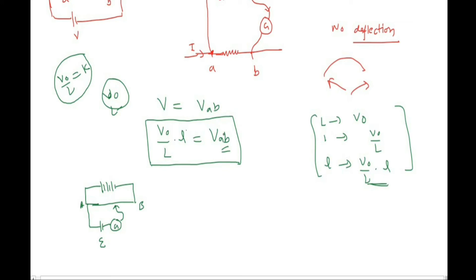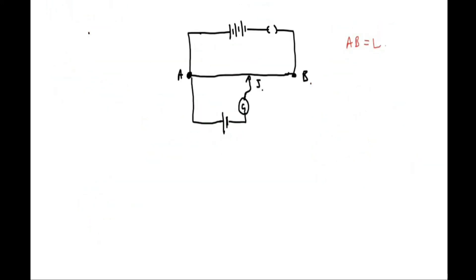Now let us see how we can find the EMF of a cell using the potentiometer. Let's say we have a cell whose EMF is E and we want to find its value. We connect the positive end of the cell to the positive end of the potentiometer, and the negative end through the galvanometer and jockey. We look for a point on the wire where the deflection in the galvanometer is zero.